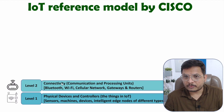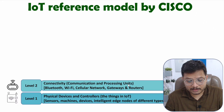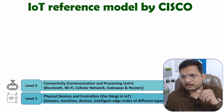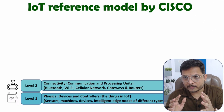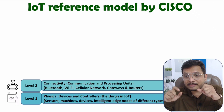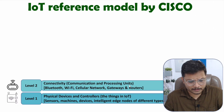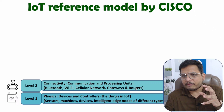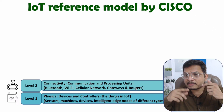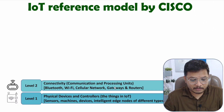In level two we have connectivity, which covers communication and processing units. Connectivity supports multiple protocols — devices may communicate using Bluetooth, Wi-Fi, or cellular networks. Connectivity also involves gateways and routers. Overall, connectivity ensures how devices communicate across the entire IoT system.